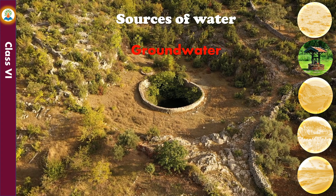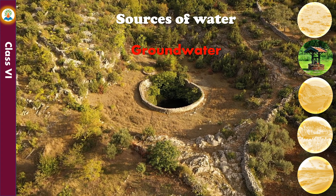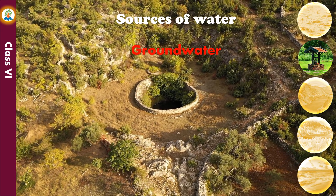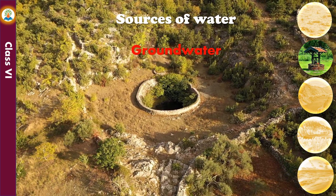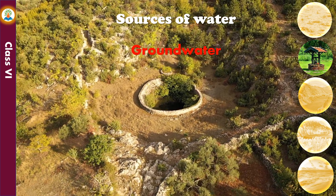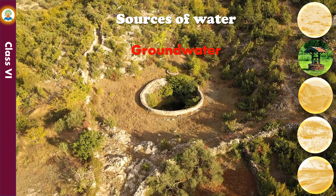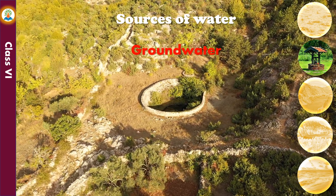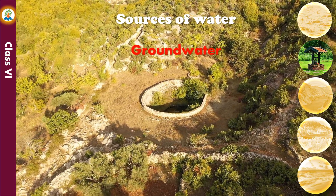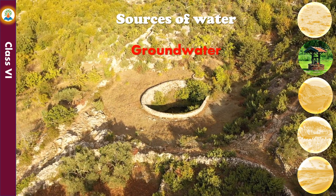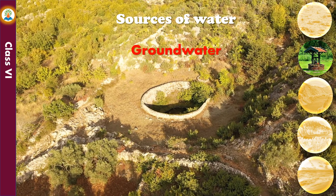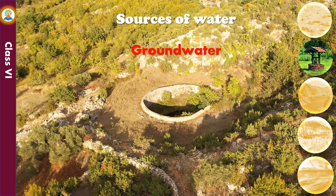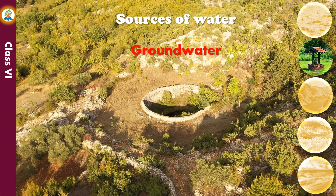During rainfall, a part of the rain water percolates through the ground and forms groundwater. As water passes through several layers of sand and rocks, it gets naturally filtered and is free from suspended impurities. We can obtain groundwater by digging wells and through tube wells.